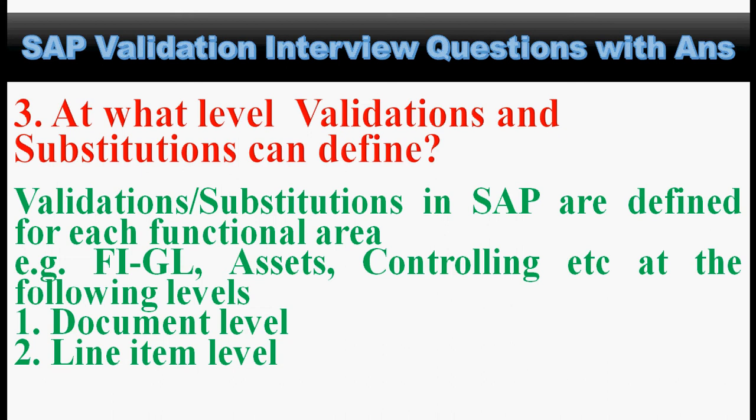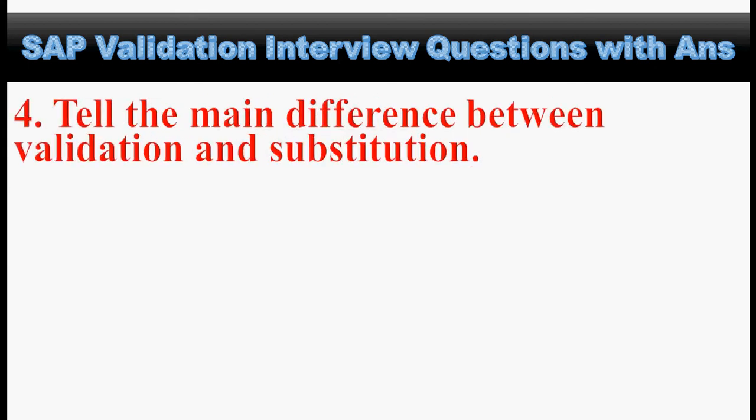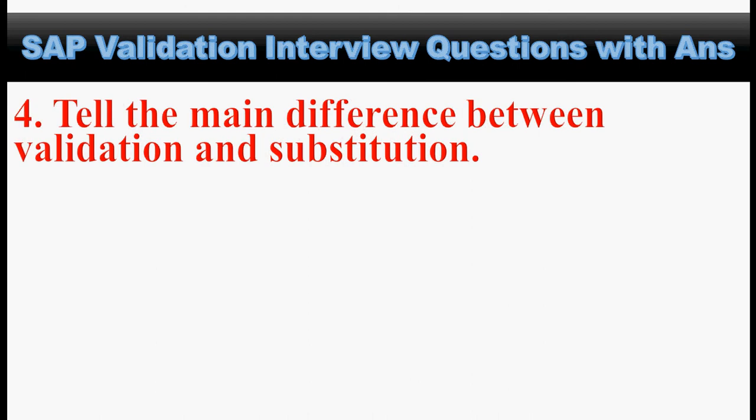Next, at what level can validations and substitutions be defined? Validations and substitutions in SAP are defined for each functional area — for example, GL, Asset, Controlling — at the following levels: document level and line item level.